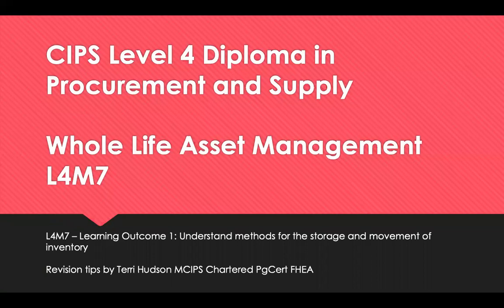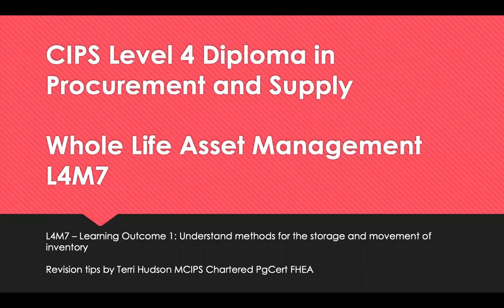Hello and welcome to Revision Tips for CIPS Level 4, Procurement and Supply. This is Module 7, Whole Life Asset Management, and we're going to look at Learning Outcome 1, which is to understand the methods of storage and movement of inventory. We're going to look at the principles, purpose and impact of stores and warehouse design, explain the use of product coding, and contrast the impact of using different warehousing equipment.